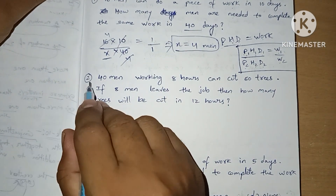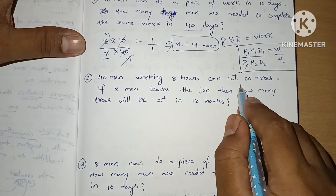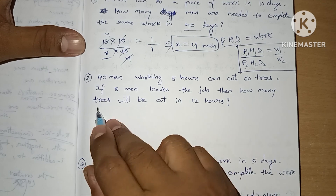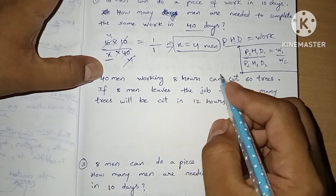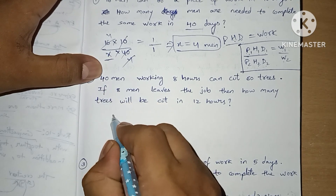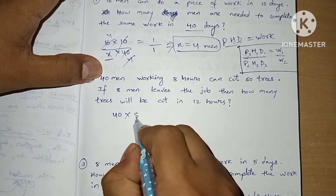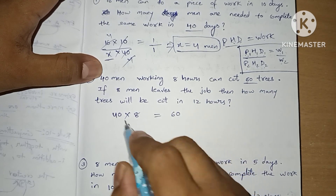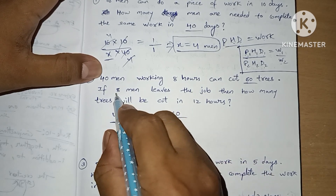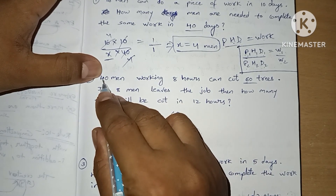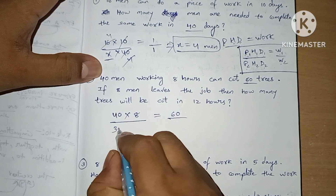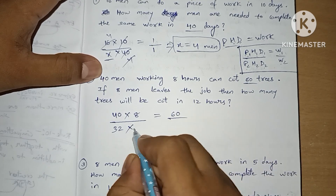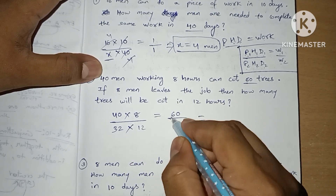Let's see the second question. 40 men working 8 hours can cut 60 trees. If 8 men leave the job, then how many trees will be cut in 12 hours? Let's start using the same PhD formula. 40 persons working 8 hours can cut 60 trees. 8 men leave, so initially there are 40 men; now there are 32 men, working for 12 hours. How many trees will be cut?